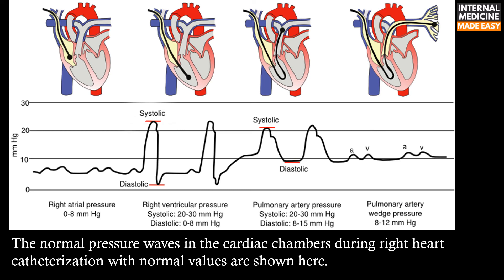The normal pressure waves in the cardiac chambers during right heart catheterization with normal values are shown here. In the right atrium, a pulsatile waveform is seen and the pressure ranges from 0–8 mmHg. In the right ventricle, the systolic pressure ranges from 20–30 mmHg and the diastolic pressure ranges from 0–8 mmHg.